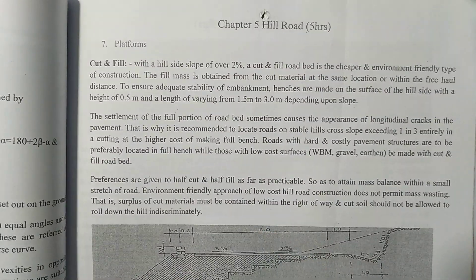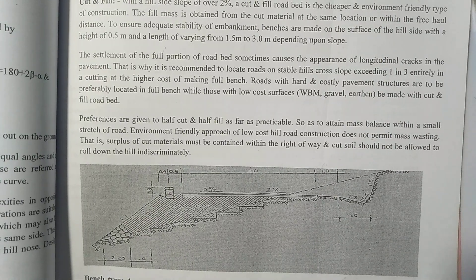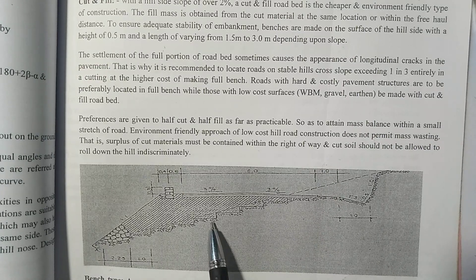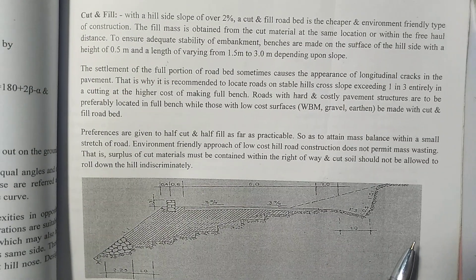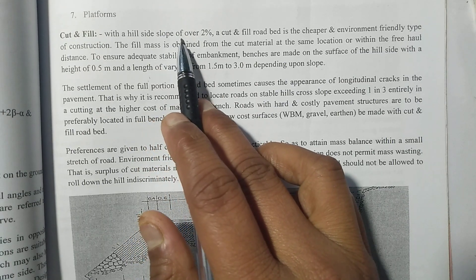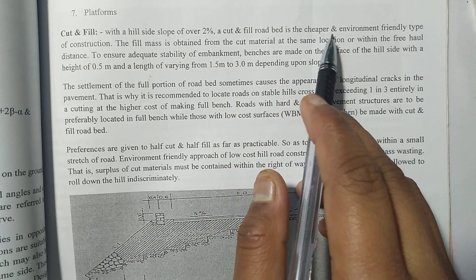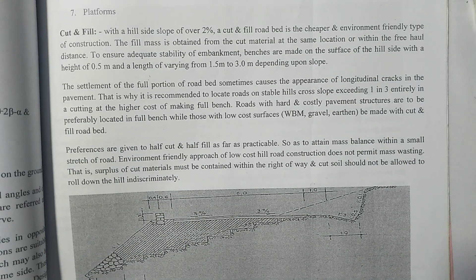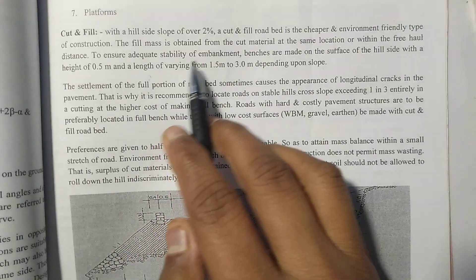Let's see the first type: cut and fill. In this figure, here is the hill and here is the river — the hillside slope is over 20 percent. The cut and fill road bed is the cheaper and environment-friendly type of construction when the hillside slope is over 2 percent. The fill mass is obtained from the cut material.